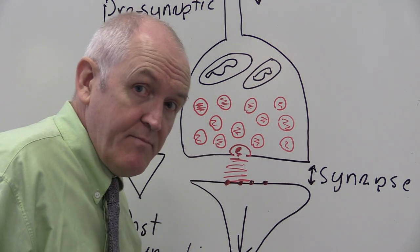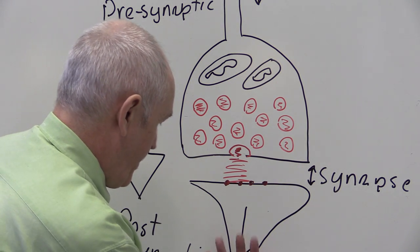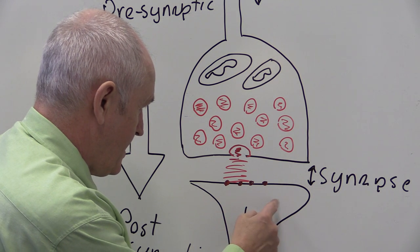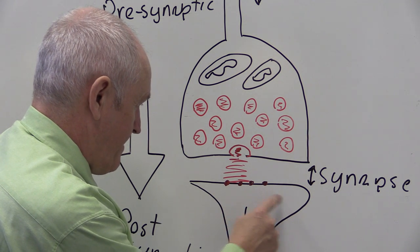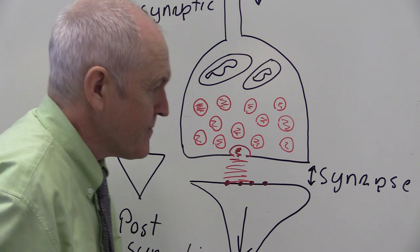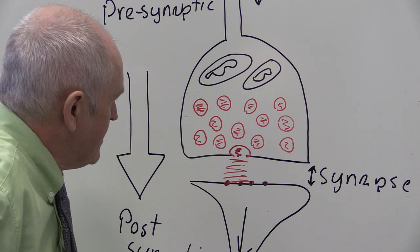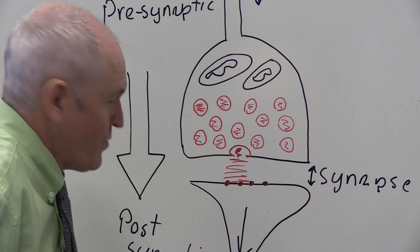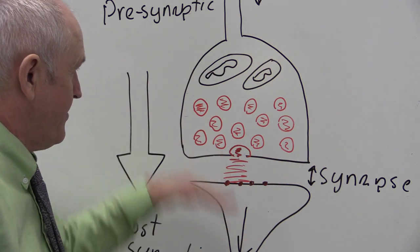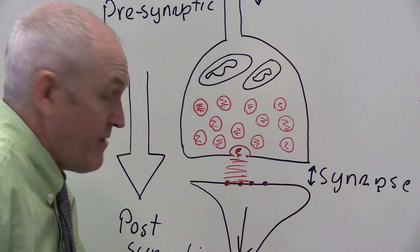If an impulse were to come the wrong way — up the post-synaptic neuron — there is no chemical transmitter there, so it cannot cross to the pre-synaptic side. The synapse therefore ensures one-way transmission from pre to post, but not from post to pre, just like a valve.